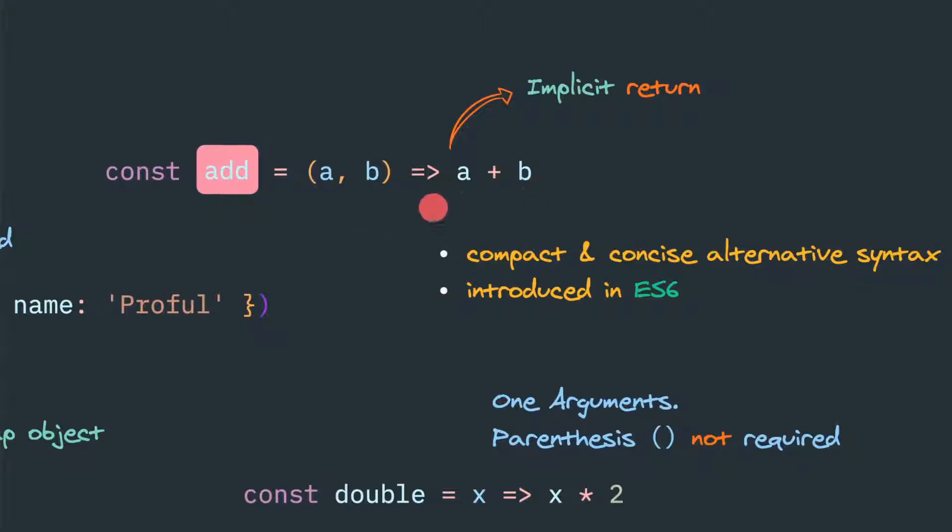This is the way we can define an arrow function. This is the arrow function name and these are the two arguments. This is the arrow key, arrow notation, which signifies it is an arrow function. Here is a plus b. In this case it is an implicit return. We don't need to explicitly mention the return keyword.